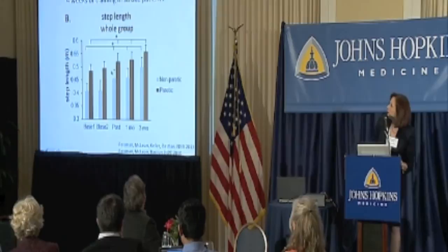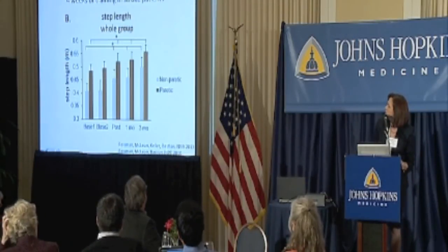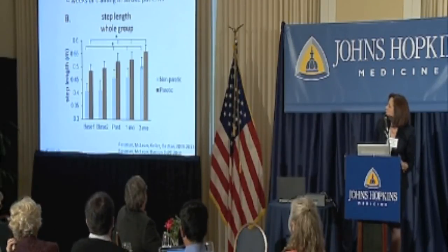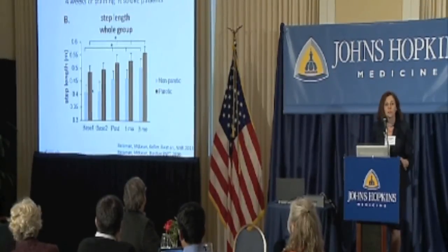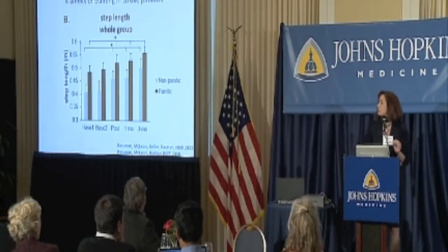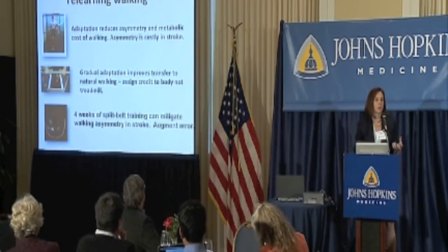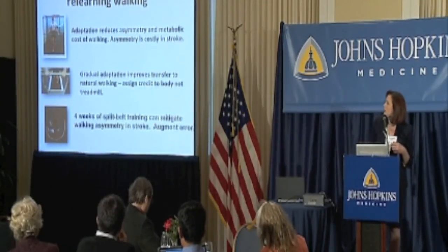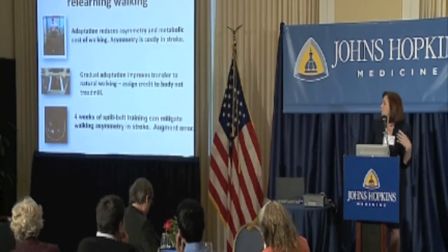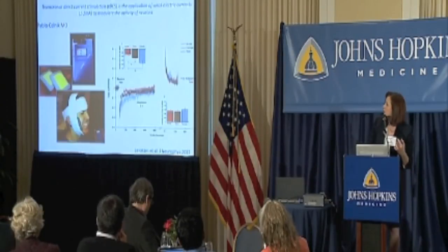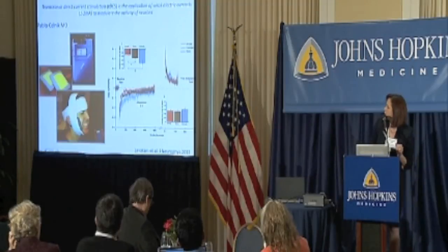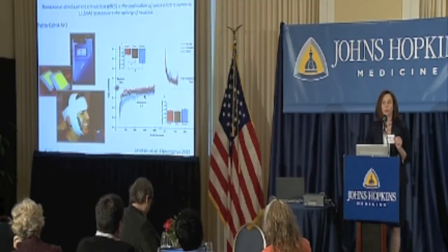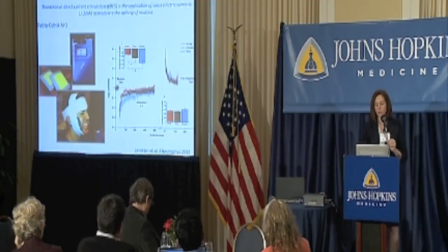Over four weeks of training with stroke patients, we've made them much more symmetric than they were before in overground walking — which is very hard to do, as regular treadmill training does not achieve this. We now also use non-invasive brain stimulation to try to further augment this process. Using two different polarities of stimulation, we can either speed or slow this learning subtly compared to normal learning. We're testing whether over time this intervention, coupled with behavioral training, works very well.